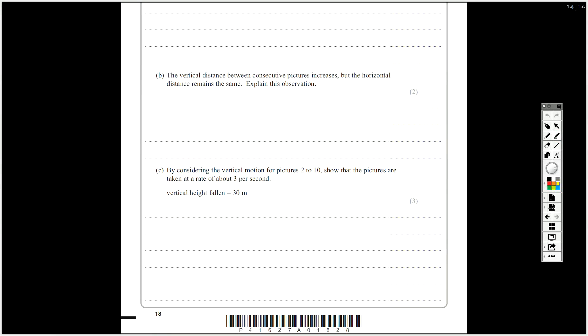So by considering the vertical motion for pictures 2 to 10, show the pictures are taken at a rate of about 3 per second. So the vertical height form is 30 metres. You might think by this point, well, I need to actually go ahead and go and measure out the distances on that photo. No, that's probably coming, but not at this point. Actually, you can just, if you figure out the information that you've got and the information you know already, then you can actually use an equation of motion in this picture here. So this is displacement. You know G.